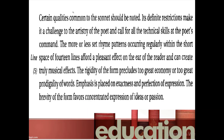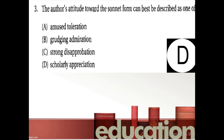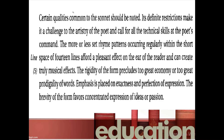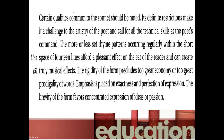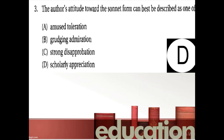You can also eliminate choice A, amused toleration. The author is not simply putting up with the sonnet form in a good-humored, somewhat patronizing way — he genuinely thinks well of it. Choice B, grudging admiration, is somewhat harder to eliminate, but the author's admiration is unforced, not grudging or reluctant, so you can eliminate choice B as well. The only answer that properly reflects the author's attitude is choice D: scholarly appreciation.